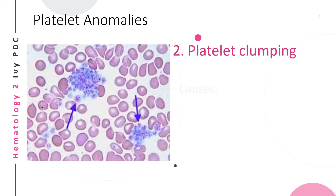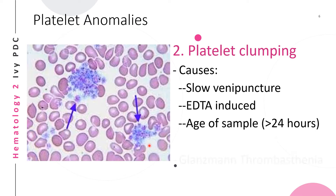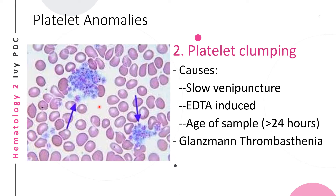The second platelet anomaly is platelet clumping. This is the phenomenon where platelets are seen clumped or grouped together in a peripheral blood smear. The cause of platelet clumping is not always pathologic — one example is a slow venipuncture, where platelets clump because of very slow extraction of blood.